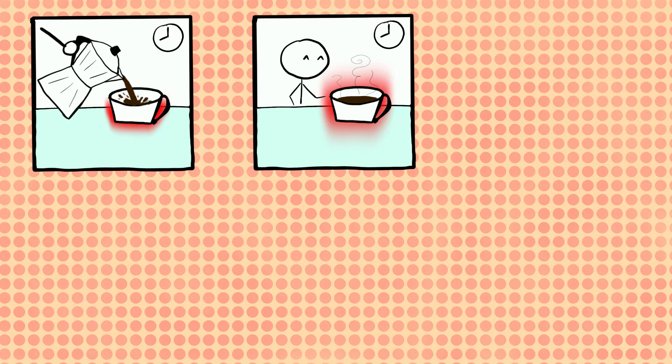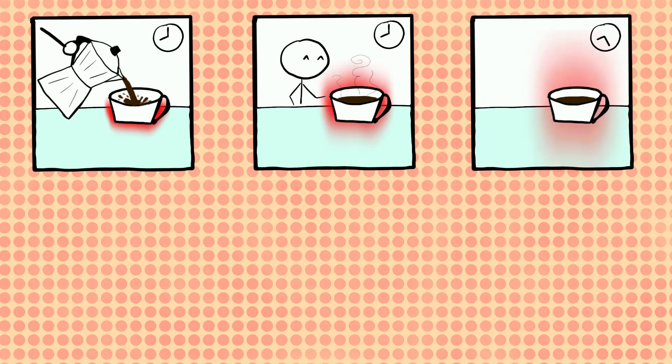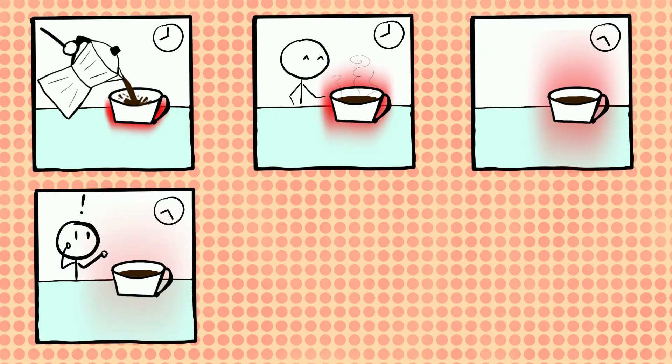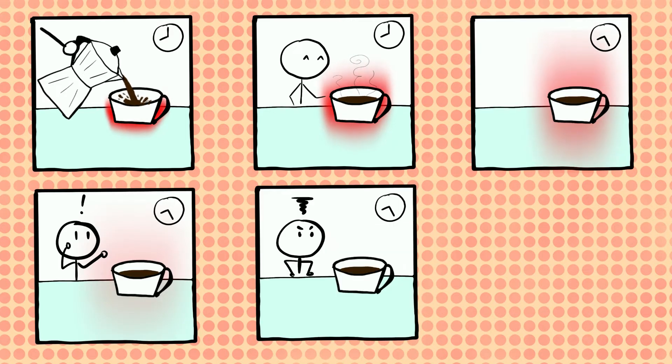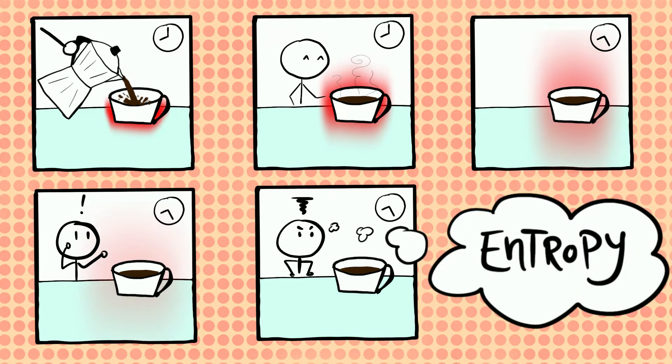You prepared a nice warm cup of coffee and you let it sit on your dining table. Now that you'd like to drink it, it's cold. It's definitely your fault, but there's a scientific concept you can also blame for it: entropy.